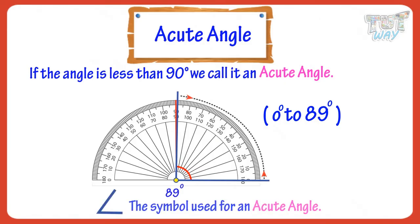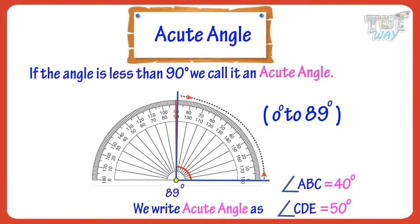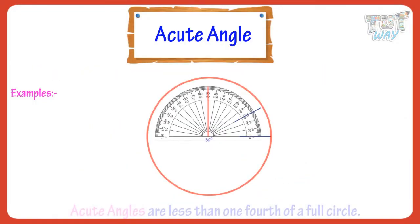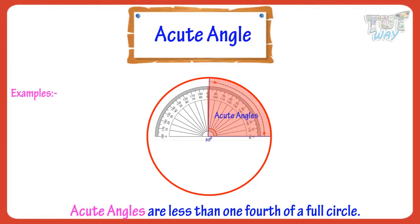This is the symbol we use for an acute angle. We write acute angles like this. Now, let's see some examples of acute angles. So kids, acute angles are less than one-fourth of a full circle.